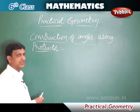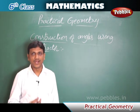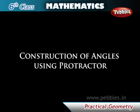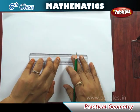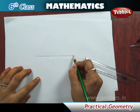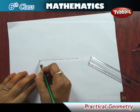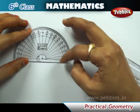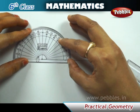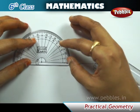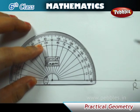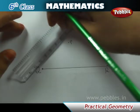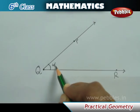Construction of angles using a protractor. Now we will see how to construct an angle using a protractor. Let us construct angle PQR equal to 40 degrees. First, draw a ray QR of any length. Place the center point of the protractor at Q and align it with ray QR. Mark a point P at 40 degrees. Join QP — angle PQR is the required angle.